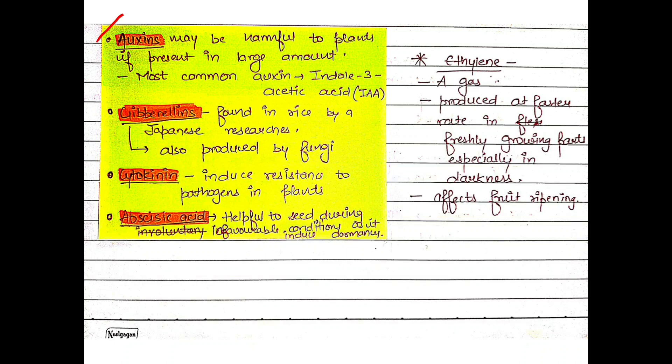Here are some extra points. Auxins may be harmful to plants if present in large amounts. The most common auxin is Indole-3-Acetic Acid. Next is Gibberellin. Gibberellin was used in rice by a Japanese researcher. The gibberellin was produced by fungi. They saw that the rice had abnormal growth. There was a fungi that released gibberellin, which causes lateral growth, cell elongation, and cell differentiation.